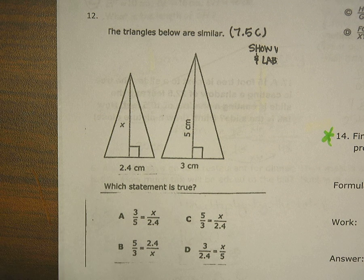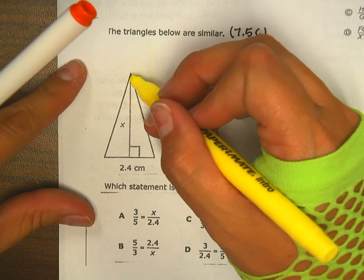Alright, looking at number 12, it says the triangles are similar. So if I know they're similar, then my angles are the same and my side lengths are proportional.